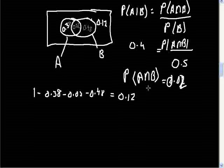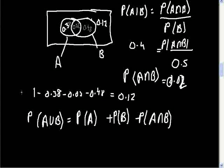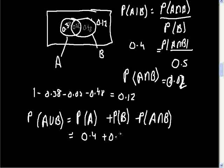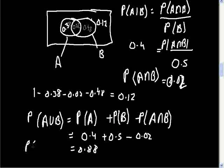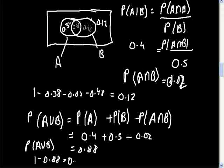Using the union formula to verify: P(A ∪ B) = P(A) + P(B) − P(A ∩ B) = 0.4 + 0.5 − 0.02 = 0.88. Everything outside is 1 − 0.88 = 0.12. This confirms the answer.